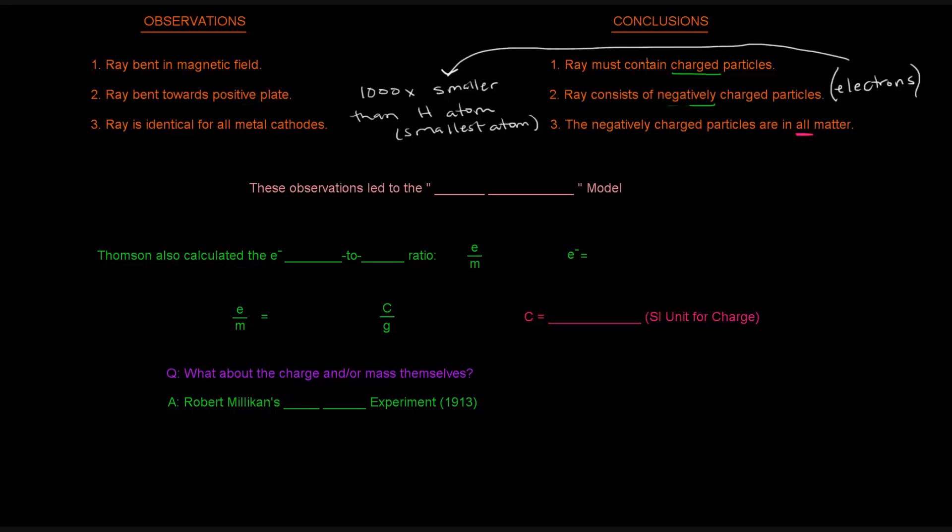Because if he says in one of his postulates that atoms are tiny, indivisible particles, right? Well, if there's something, these electrons namely, and they're 1,000 times smaller than the smallest atom, then that means atoms are divisible into subatomic particles, right?